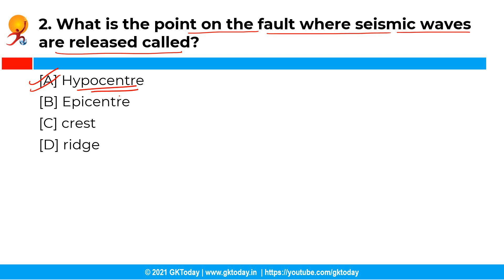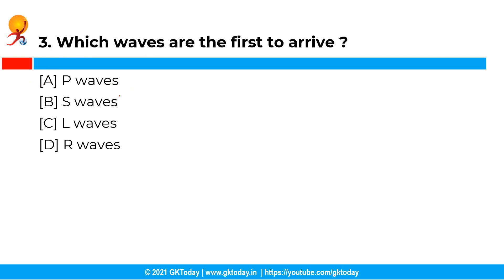The next question is: which waves are first to arrive? You have the following options and the correct answer is option A, that is P waves. The P waves, also called longitudinal waves, pass through both solids and liquids and are the first to arrive.